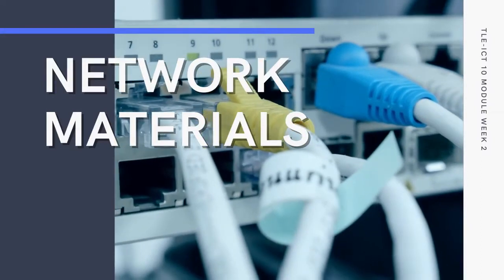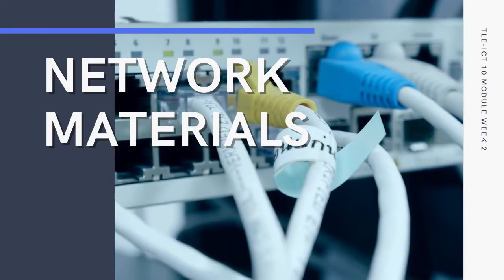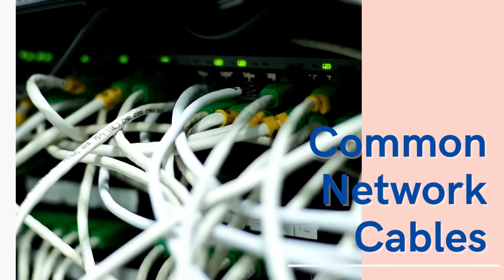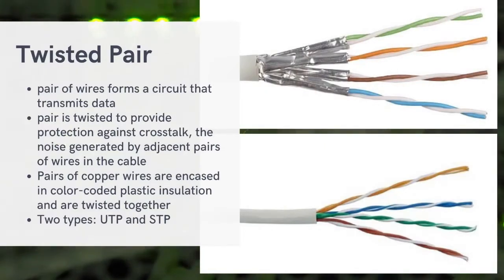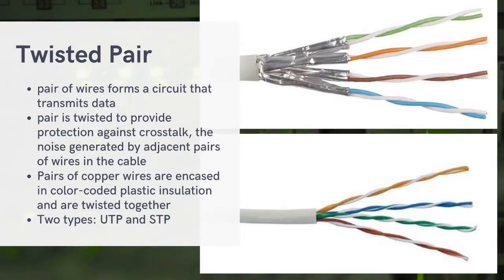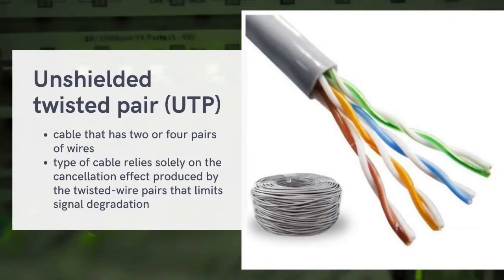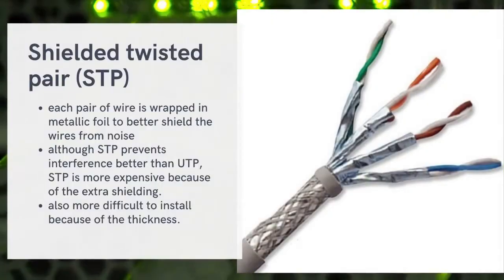In Part 1 of this video we discussed the common network cables used in computer networks. We are now on Week 2 of TLE ICT 10, all about network materials. In Part 1 we covered twisted pair cables — which have two types, UTP and STP — as well as coaxial cable and fiber optic cable.